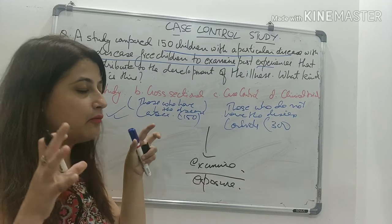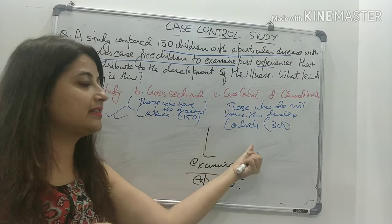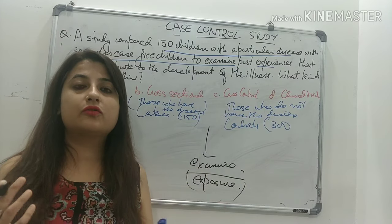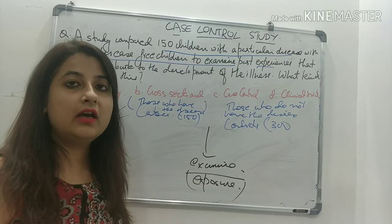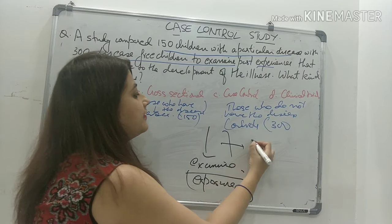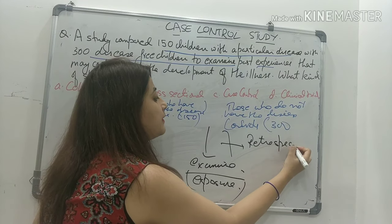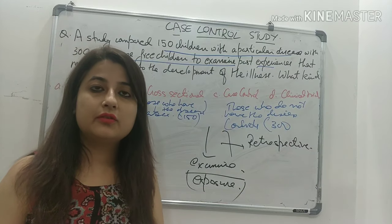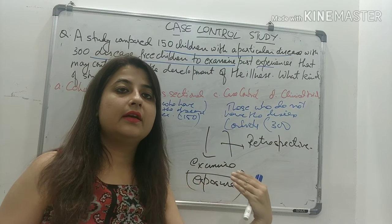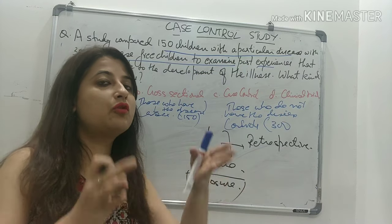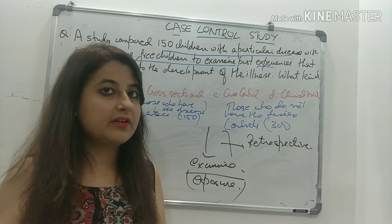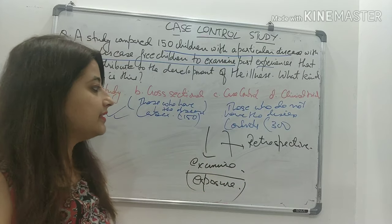So what does this indicate? You are starting with cases and controls and going back in time to see how many were exposed and not exposed to a particular exposure. This is a retrospective study design. Compare this to a cohort study, where you start with people exposed to a particular exposure like smoking and those not exposed, then follow them over time to see how many develop the disease and how many do not. So a cohort is a prospective, forward-looking study.